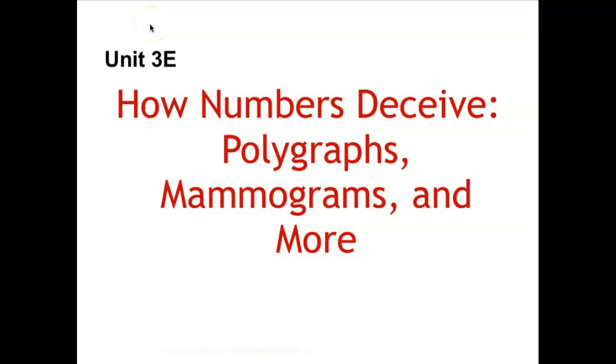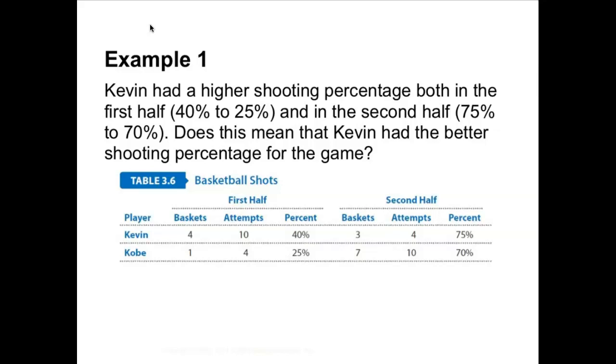How numbers deceive. We're going to jump straight into an example. If Kevin had a higher shooting percentage both in the first half, 40 to 25 percent, and in the second half, 75 percent to 70 percent, does this mean that Kevin had a better shooting percentage for the game? The answer is no, he could have but not necessarily.